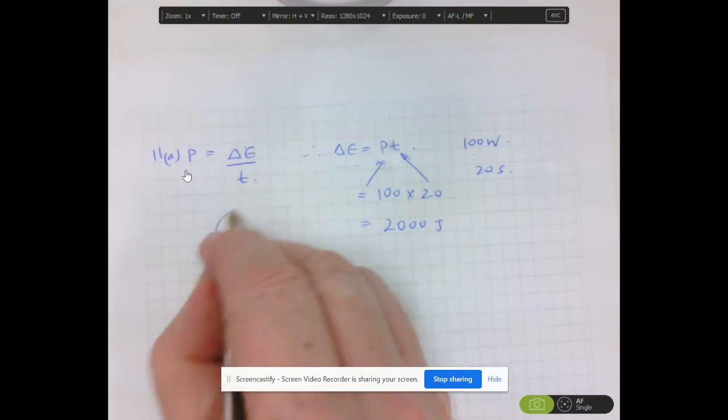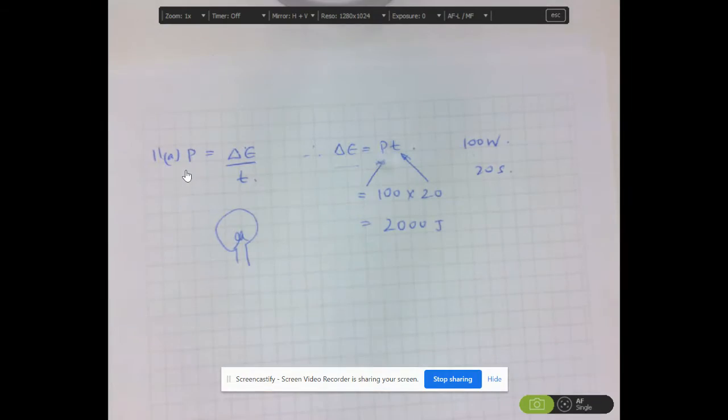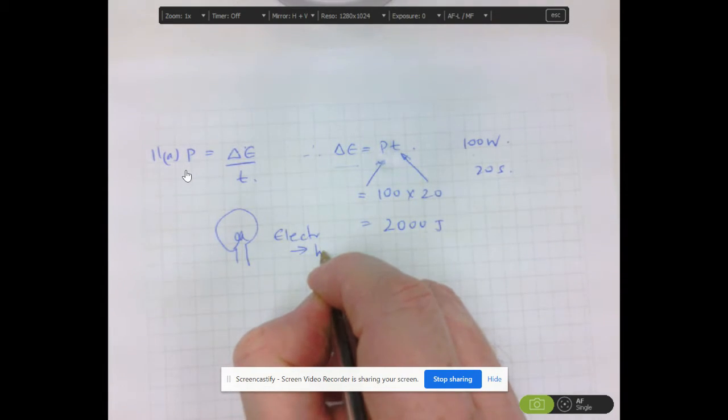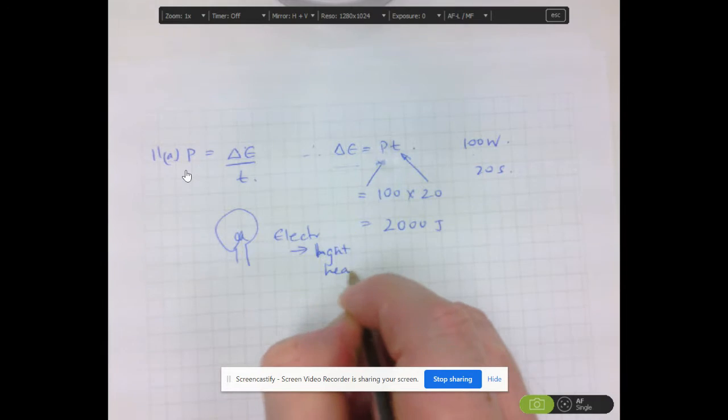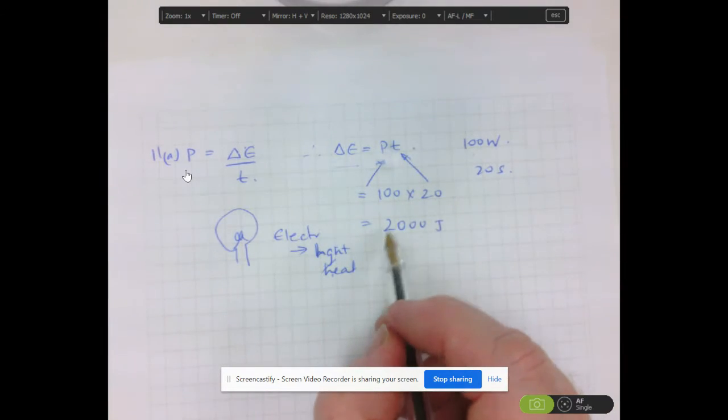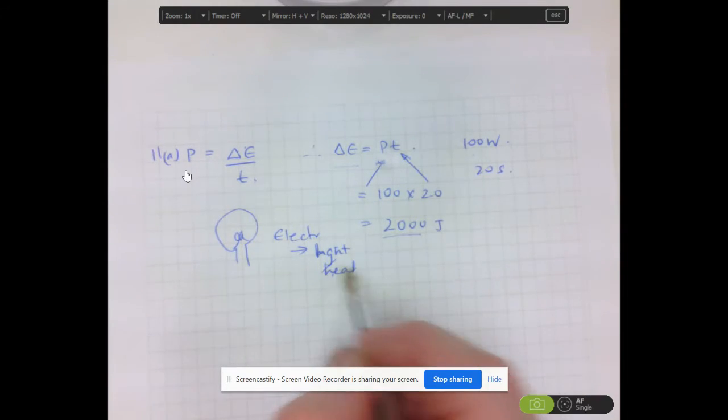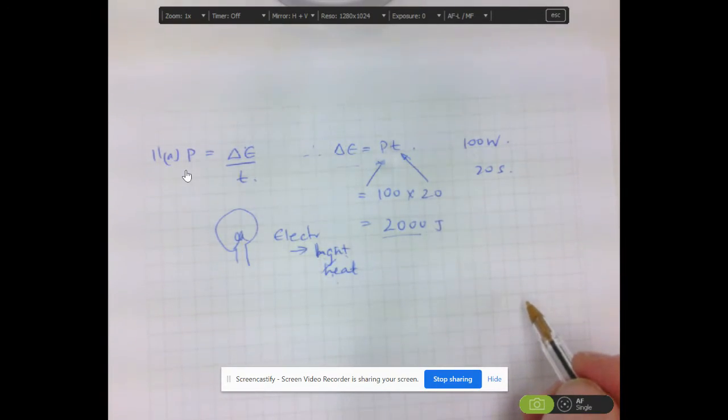Remember, a light globe, its purpose is to transfer electrical energy into light and heat. So in the 20 seconds, 2,000 joules has been converted into something else. It might be something other than light and heat, of course. There could be other forms that it might be also doing.